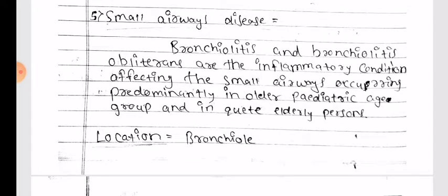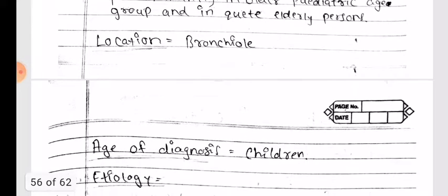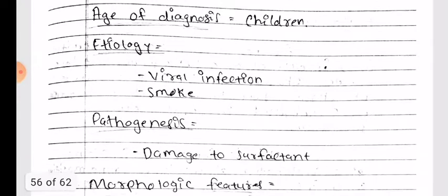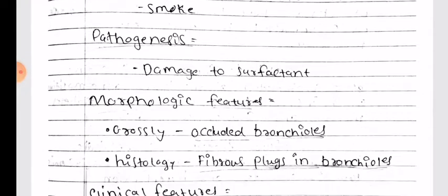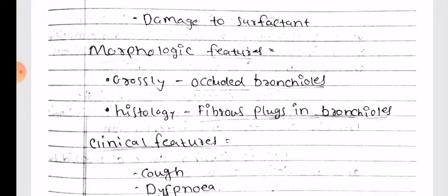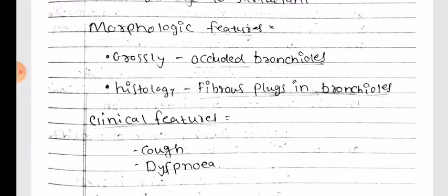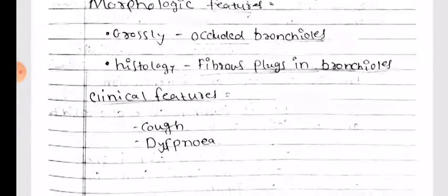Small airway disease: bronchiolitis and bronchiolitis obliterans are inflammatory conditions affecting the small airways, occurring predominantly in older pediatric age groups and in elderly persons. Location: bronchioles. Age of diagnosis: children. Etiology: viral infection and smoke. Pathogenesis: damage to surfactant. Morphologic features: grossly occluded bronchioles; histologically, fibrous plugs in the bronchioles. Clinical features: cough and dyspnea.